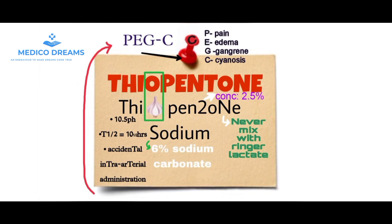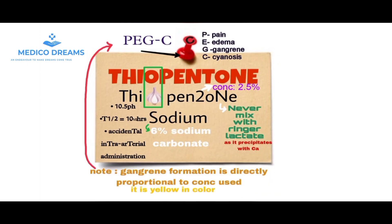The capital S stands for 6, so 6% sodium carbonate is present in Thiopentone sodium. We should also note that gangrene formation is directly proportional to the concentration used — more concentration leads to more gangrene formation — and this occurs when there is accidental intra-arterial administration.